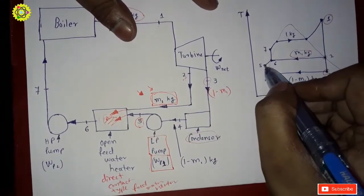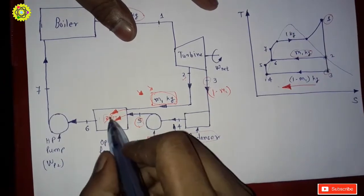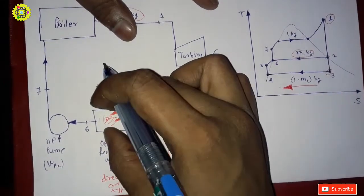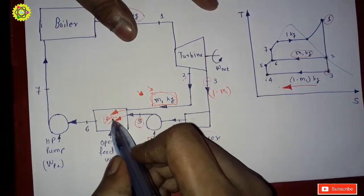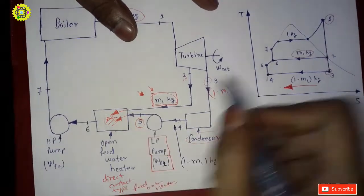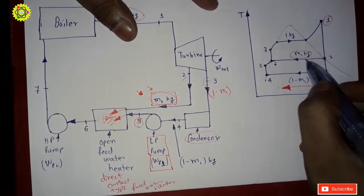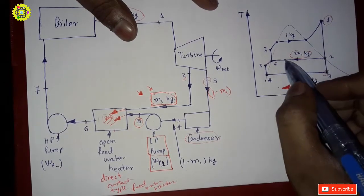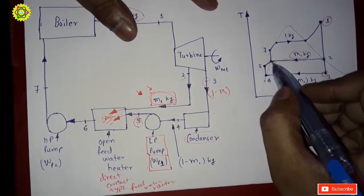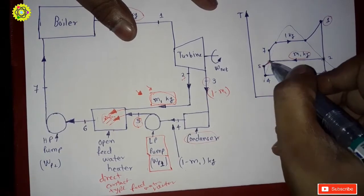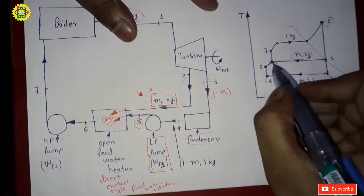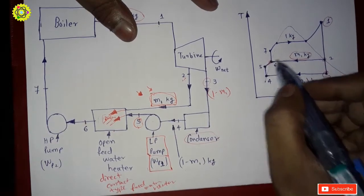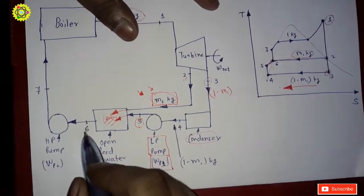After direct mixing, the whole mixture comes out at State 6, as you can see here. The extracted steam and the condensate from the LP pump mix completely, and at State 6 the complete mixture is obtained in liquid form.